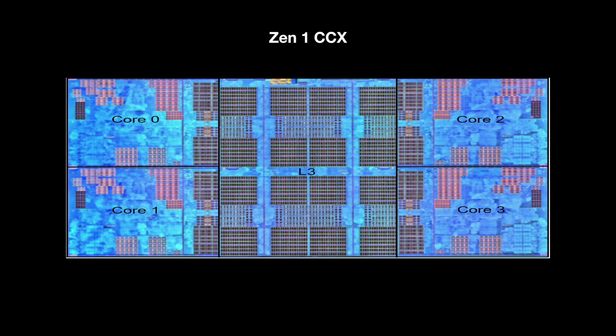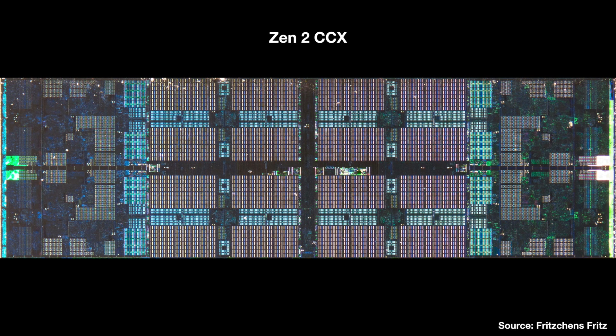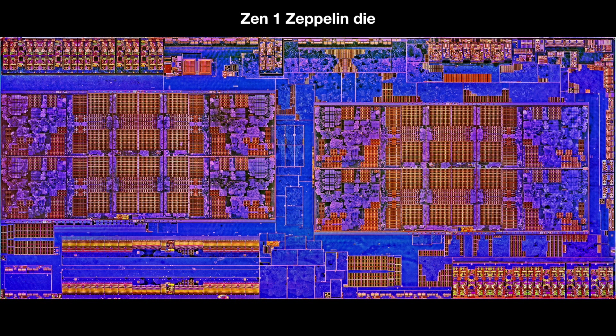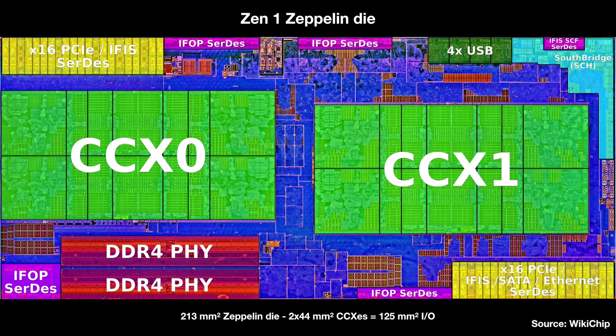Zen does not have a unified cache. Instead, they have CCXs, where each CCX has four cores, some L3 cache, and presumably a crossbar in the middle connecting all the parts. Here's what a Zen 1 CCX looks like, and here's a Zen 2 CCX, which is basically the same but got wider because the L3 in the middle is twice as large. Now here's the whole Zen 1 die, and here's the annotated version, where you can see the two CCXs are like islands in the chip that aren't directly connected to each other.